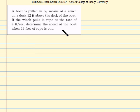Okay, here we have a typical related rates problem. A boat is being pulled in by means of a winch on a dock 12 feet above the deck of the boat, and we know that the winch pulls in the rope at a rate of 4 feet per second, and we need to find the speed of the boat when 13 feet of rope is out.